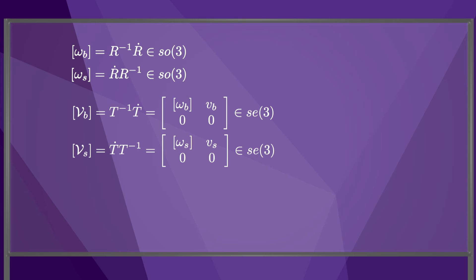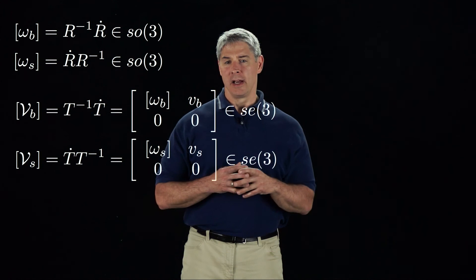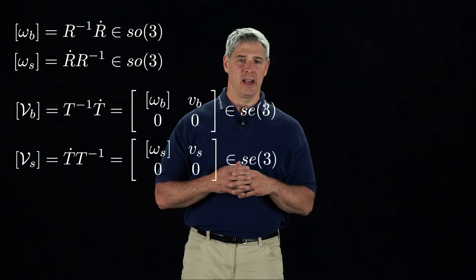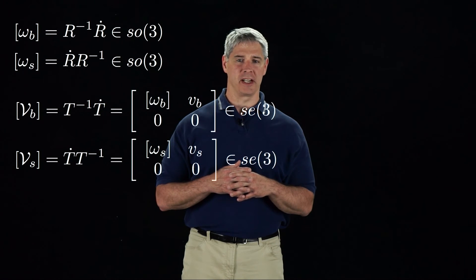Notice that we are overloading the bracket notation. In one case it means the matrix representation of an angular velocity, and in this case it means the matrix representation of a twist.